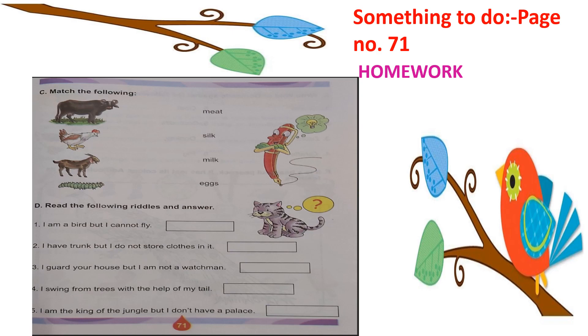Exercise D: Read the following riddles and answer. You have to give the answers. First riddle: I am a bird but I cannot fly. Who is that?